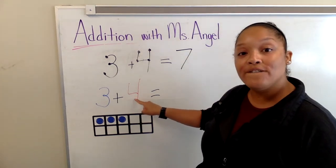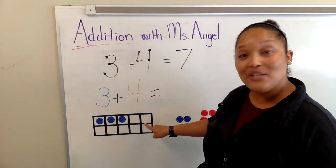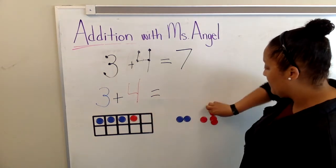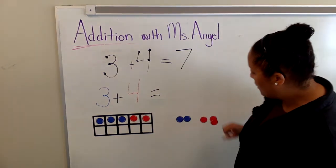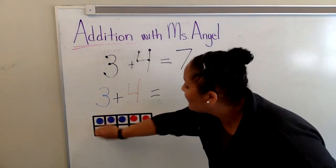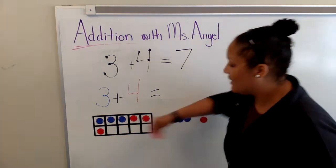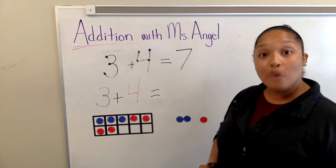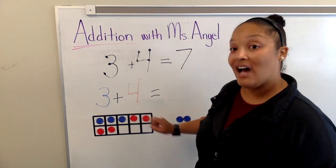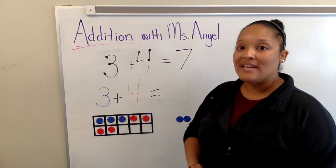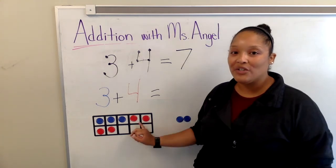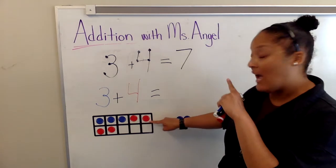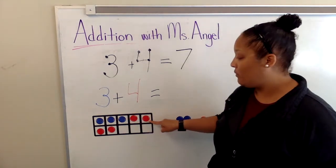I need to add four dots to my tens frame. Let's add four dots: one, two, three, four. I have four red dots in my tens frame. Now, do you remember how to count this? I need to look at the top row — is it full?